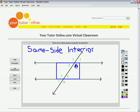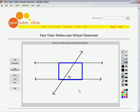Let's pick angle 4. The same side interior angle to angle 4 is angle 6, because it's the only angle you can get to without crossing any lines. Same side interior angles are supplementary, which means they add up to 180 degrees.